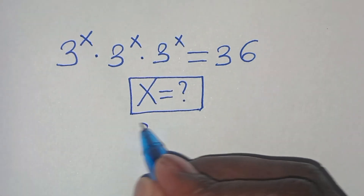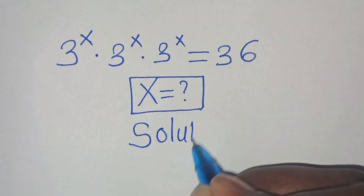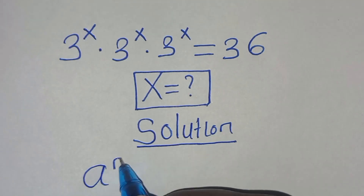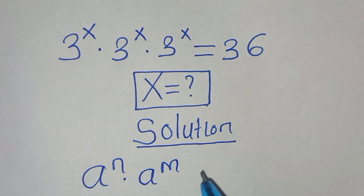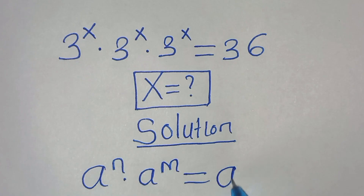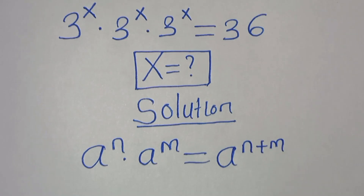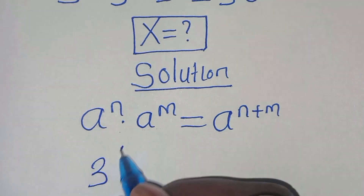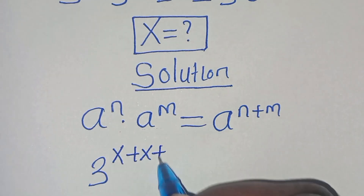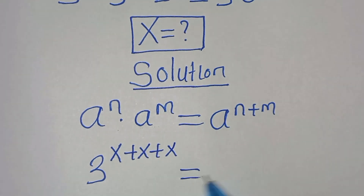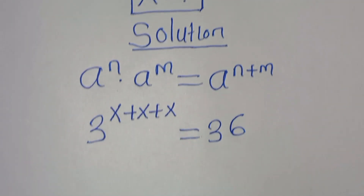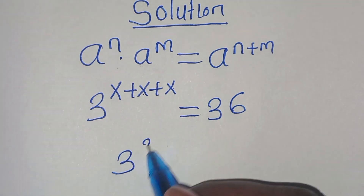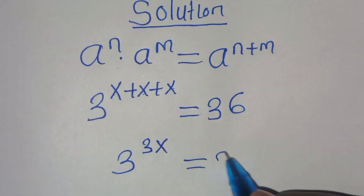Now let's provide a solution. This exponential equation is of the form a to the power of n times a to the power of m, which we can express as a to the power of n plus m. Applying this exponent property, we have 3 to the power of x plus x plus x, which is 3x, equal to 36.